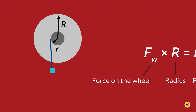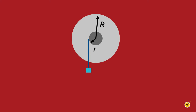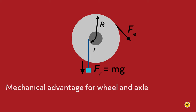Here we can see where the radii — lowercase r and uppercase R — are measured from, and we can see two possible forces acting on the system. In this case the wheel is turned in the direction of fe to lift the box, whose force is fr equals mg. The mechanical advantage for the wheel and axle is defined using the radii: MA equals R over r.